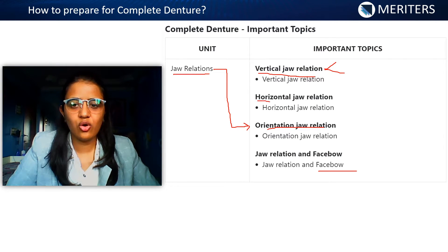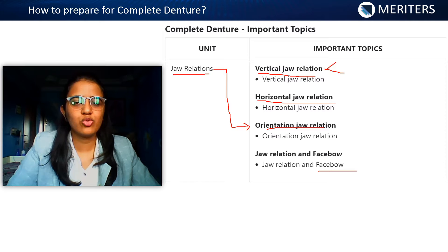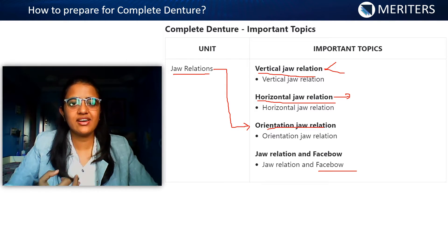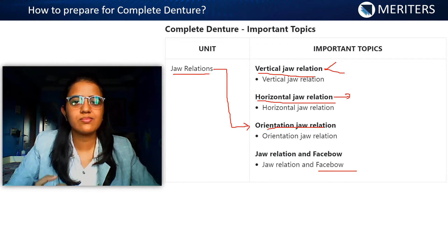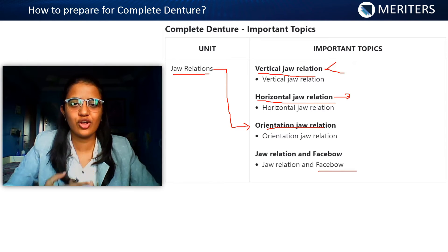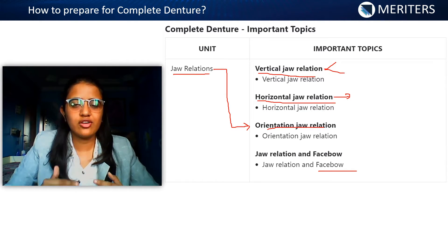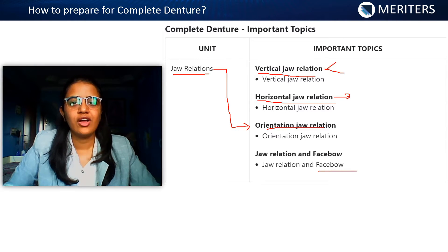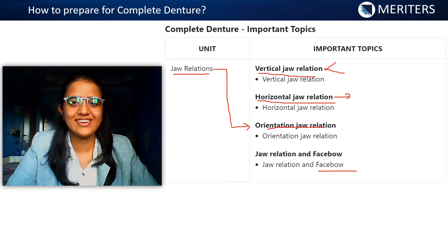Next is horizontal jaw relation. The most important part here is centric relation — its definition, what centric relation really means, the difference between centric relation and centric occlusion, and the different methods of recording centric relation. Different authors have given different classifications of centric relation recording methods, so you need to know which author described which type. That's all you need to know for jaw relations in complete denture.